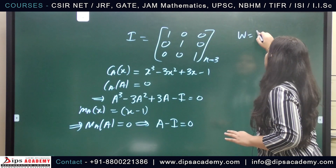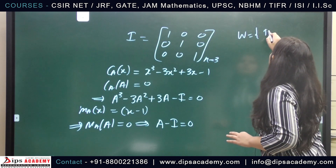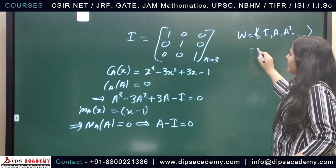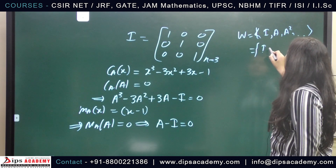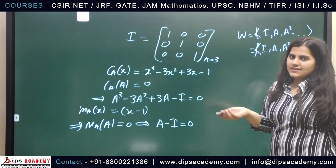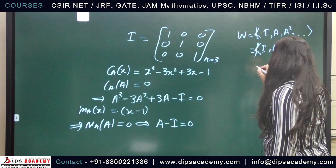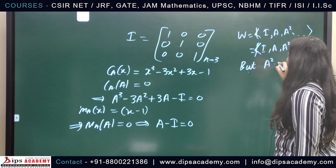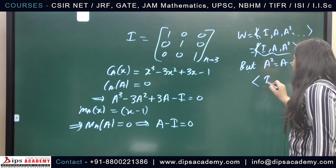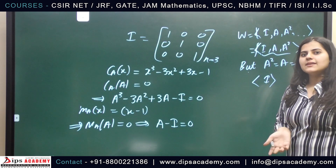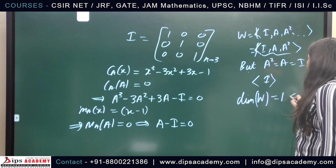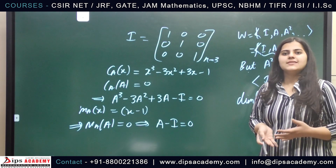So in this case, the space W = span{I, A, A²} should equal span{I, A, A²} as we proved earlier, with dimension less than or equal to n. But since A² = A = I, the set {I, A, A²} reduces to the singleton {I}. This implies the dimension of W in this case is 1, which is strictly less than 3. Therefore, option C — which states dimension equals exactly n — is also incorrect.